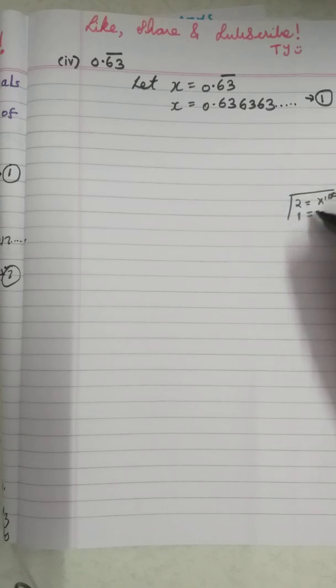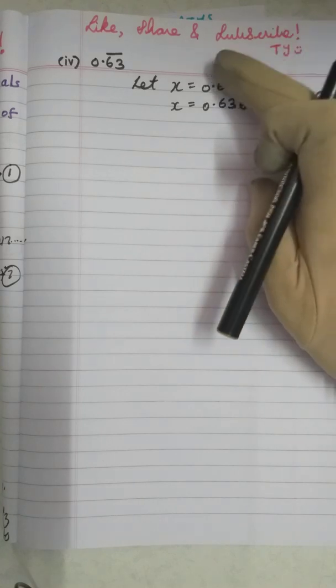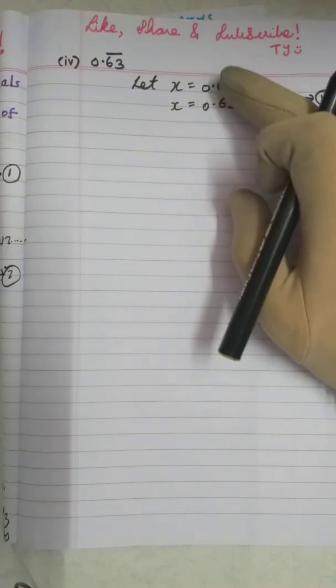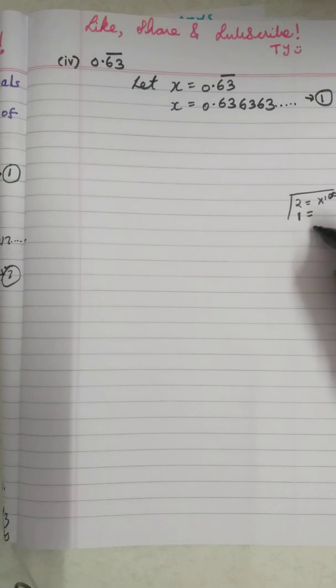If periodicity is 1, that means you will have bar on one digit which will repeat only one time. Suppose you have 0.3̄. What is the periodicity here? Periodicity is 1. So in that case, you have to multiply it with 10.